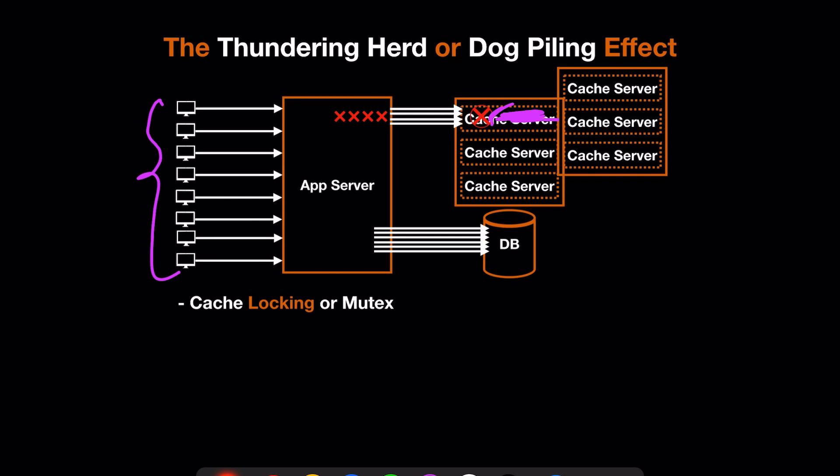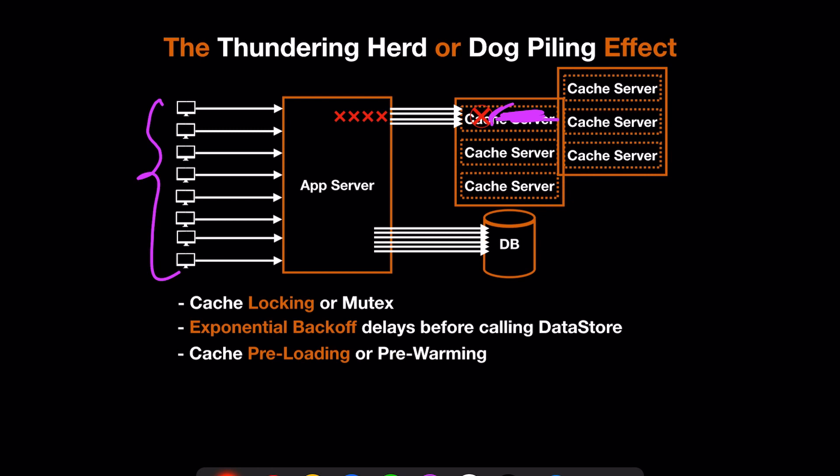To avoid the thundering herd or dog piling effect, we can take several precautions. First, cache locking or mutex — when one process is updating cache for a cache miss, it locks that cache entry so other callers wait for the refreshed data rather than all hitting the DB. Second, exponential backoff delays before calling the data store — instead of all processes calling the DB simultaneously, we add staggered delays so retries are spread out over time. Third, cache preloading or prewarming — when adding new cache servers, we run scripts to preload the cache with data aligned to the existing cache setup, avoiding the empty-cache thundering herd problem.